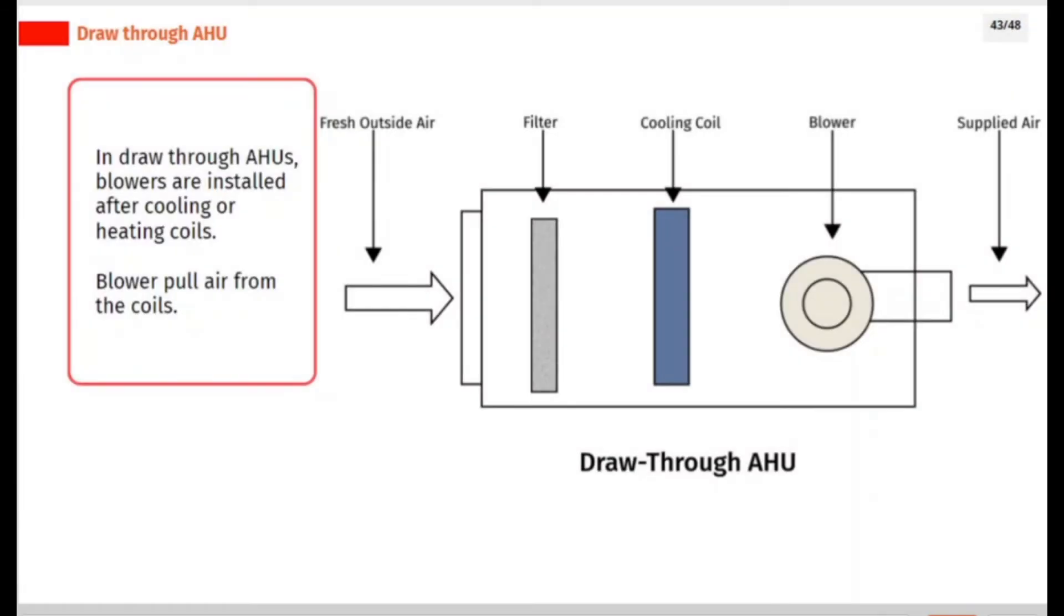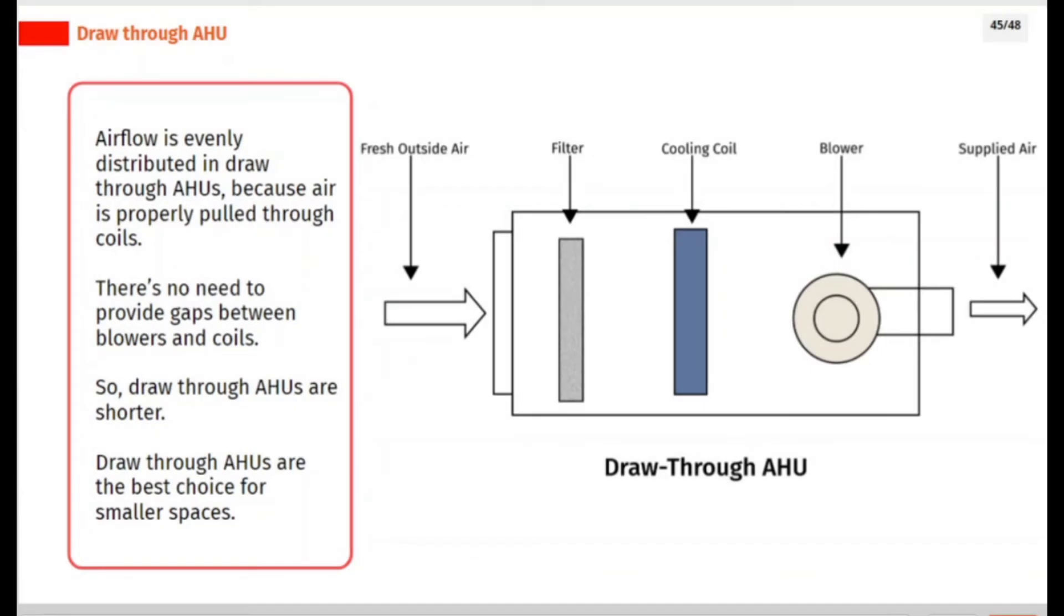In draw through AHUs, blowers are installed after cooling or heating coils. Blowers pull air from the coils. Airflow is evenly distributed in draw through AHUs because air is properly pulled through coils. There's no need to provide gaps between blowers and coils, so draw through AHUs are shorter. Draw through AHUs are the best choice for smaller spaces.